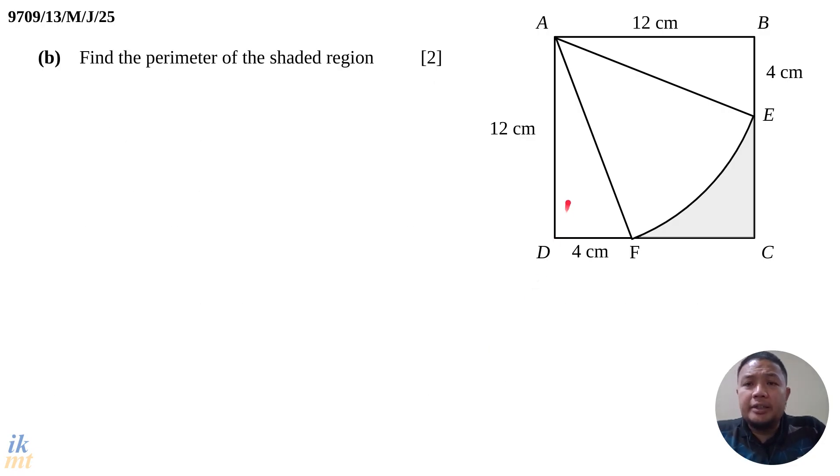In part B, they ask you to find the perimeter of the shaded region. We already know this angle is 0.9273 radians. The shaded region is built by the length EC, the length FC, and this arc. We already know the length of FC and EC, they are both 8 cm. So all we need to find is the arc length. The arc length is radius times the angle in radians. We already have the angle in radians, so now we need to find the radius.